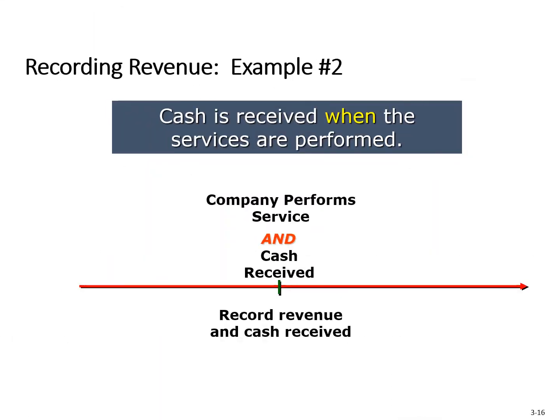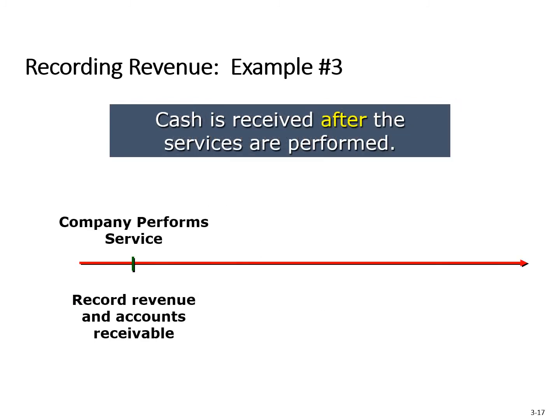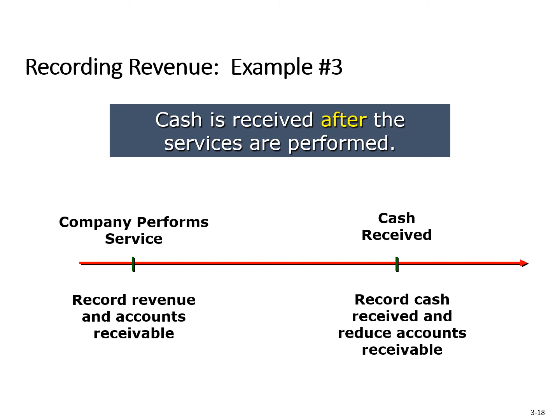Cash can be received on the date the product is delivered or the services are provided. If cash is received at the same time as goods or services are delivered, we record the revenue and the cash at the same time. In many cases, cash is received after the goods are delivered or services provided. In this example, we establish an asset account called accounts receivable. When the company collects cash from the customer, the receivable will be eliminated — we increase cash and decrease accounts receivable. We do not record revenue; it's simply an exchange of one asset for another.